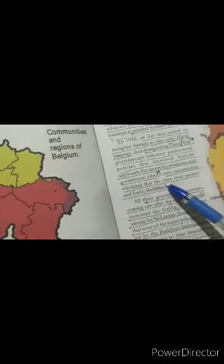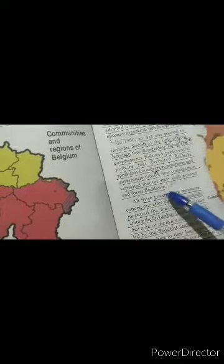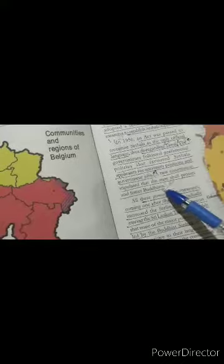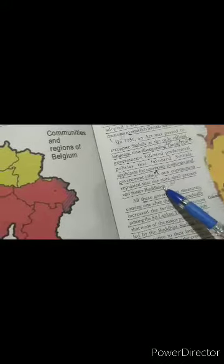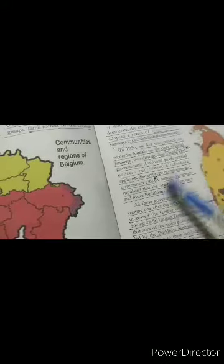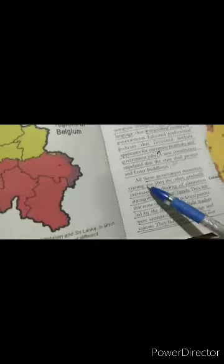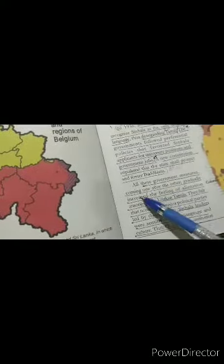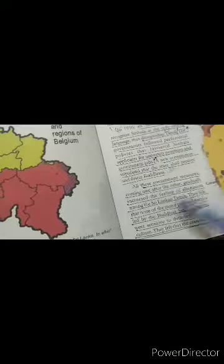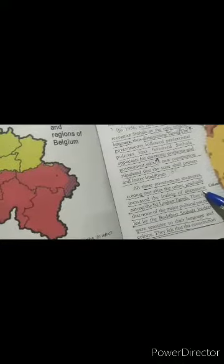A new constitution stipulated that the state shall protect and foster Buddhism, with Sinhala as the official language. In this way, they tried to rule over the minority groups — the Tamils. All these government measures, coming one after the other, gradually increased the feeling of alienation among the Tamil community.